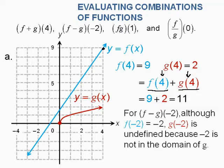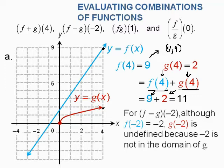When we put 4 in for x, the function gives y equals 9. So f of 4 equals 9 — when x is 4, y is 9. This is just a fancy way to write ordered pairs using functional notation. For g of 4, going over to where x is 4 on the red graph, y lands at 2. So f of 4 plus g of 4 is 9 plus 2, which gives us 11.